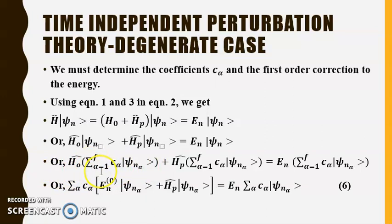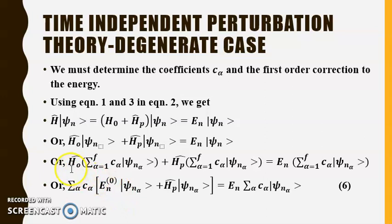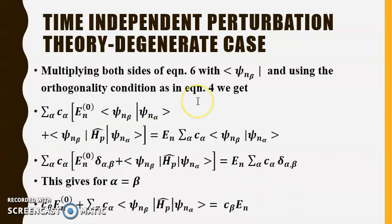We have H^0 Σ_α c_α|ψ_nα⟩ + H' Σ_α c_α|ψ_nα⟩ = E_n Σ_α c_α|ψ_nα⟩. Using the eigenvalue equation for the unperturbed states, H^0|ψ_nα⟩ = E_n^0|ψ_nα⟩, we group terms to get Σ_α c_α (E_n^0|ψ_nα⟩ + H'|ψ_nα⟩) = E_n Σ_α c_α|ψ_nα⟩. We then take the scalar product by multiplying each term with ⟨ψ_nβ| and apply the orthogonality condition from equation 4.